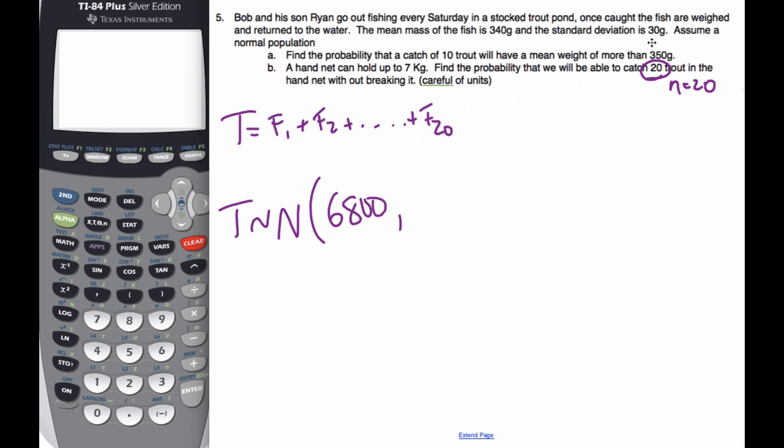The variance, well, the variance is going to be, of each one is 30 squared, and there's 20 of them, so it's going to be 20 times 30 squared is my variance.